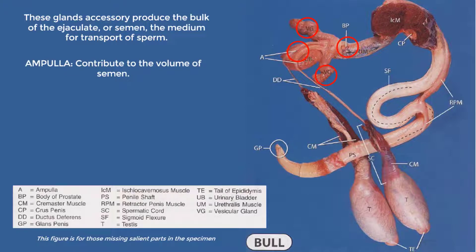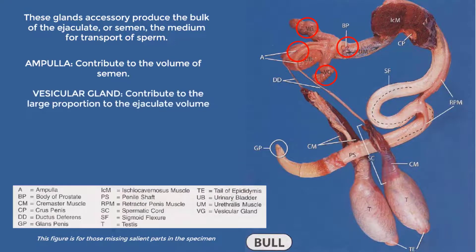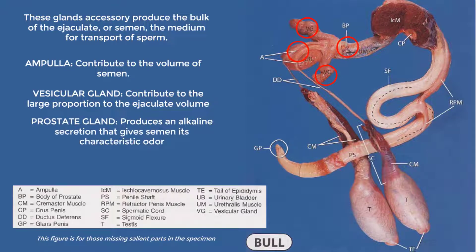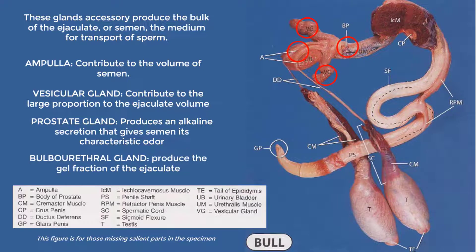The ampulla, associated with the terminal parts of the ductus deferens, contribute to the volume of semen. The paired vesicular glands, formerly known as seminal vesicles, are lobulated glands that contribute a large proportion to the ejaculate volume. The unpaired prostate gland produces an alkaline secretion that gives semen its characteristic odor. Lastly, the bulbourethral gland, also known as Cowper's gland, produces the gel fraction of the ejaculate.